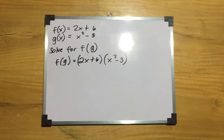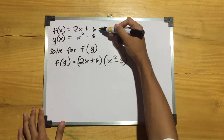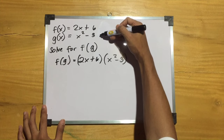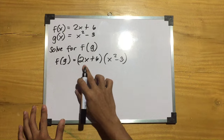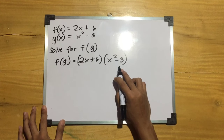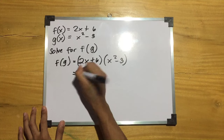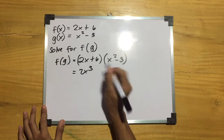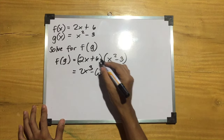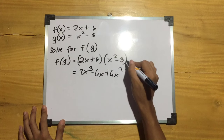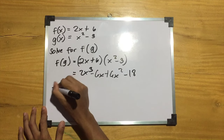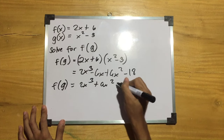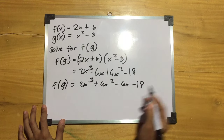Now, the product of functions using the same equations. f times g equals the quantity 2x plus 6 times the quantity x squared minus 3. So 2x times x squared equals 2x cubed, 2x times negative 3 equals negative 6x, 6 times x squared equals 6x squared, and 6 times negative 3 equals negative 18. Therefore f times g equals 2x cubed plus 6x squared minus 6x minus 18.